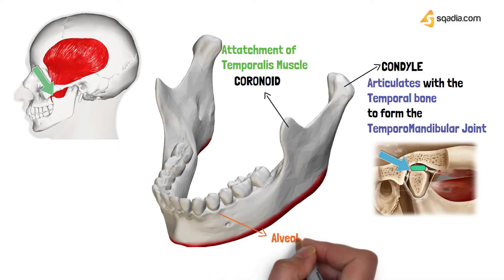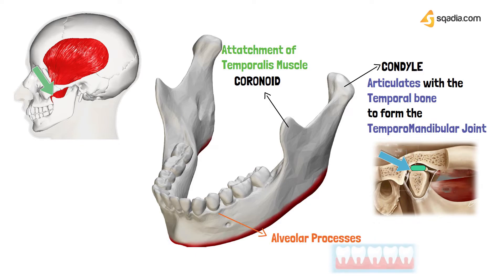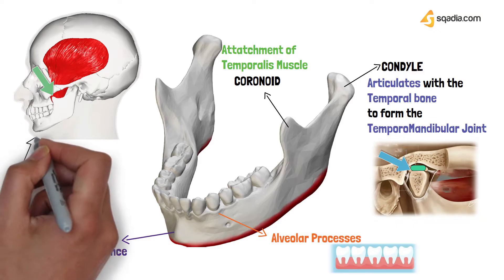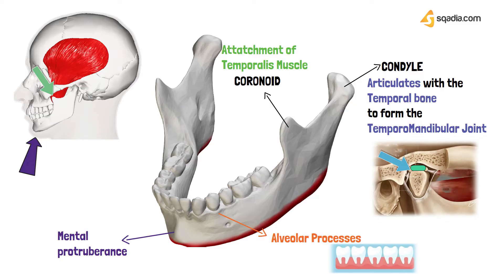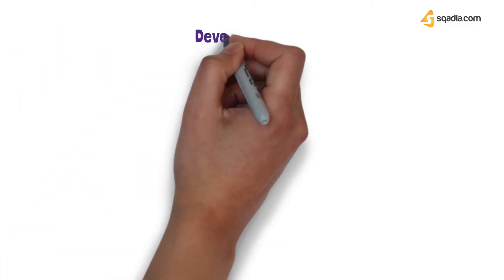Here we have the alveolar processes — a thick ridge of bone that holds the tooth socket, which contains the tooth. We also have the mental protuberance, also known as the chin. Now let's move on to the development of the mandible.